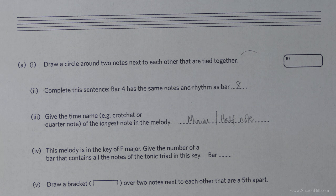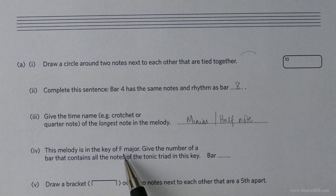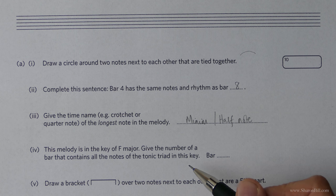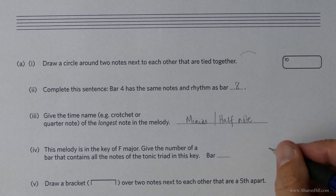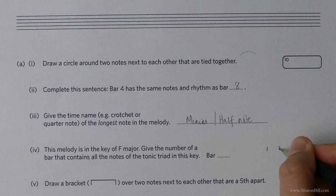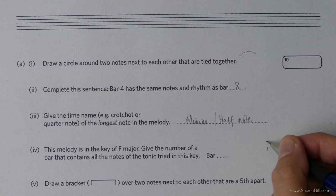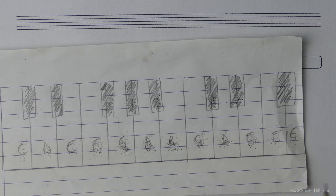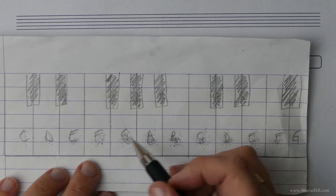So getting through with this quite quickly. So this melody is in the key of F major. Very generous in telling us that. Now we need to give the number of a bar that contains all the notes of the tonic triad. And so first of all before we go looking to find it we need to be sure what we're actually looking for. And if you remember the tonic triad is built of the first, the third and the fifth degrees of the scale.